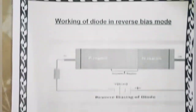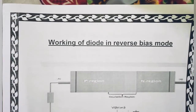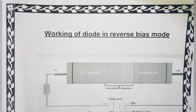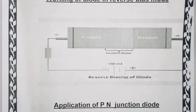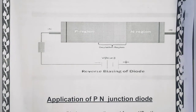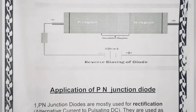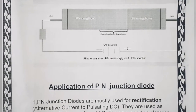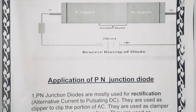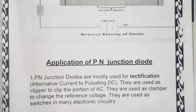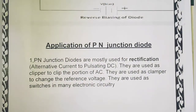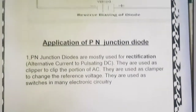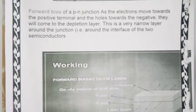After that we have the next page — working of diode in reverse bias mode. With the help of diagrammatical representation, reverse bias of diode mention है, और उसकी कुछ application हैं — check करिएगा।